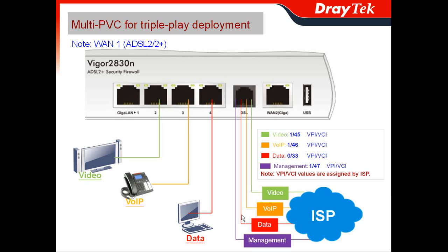Another demand from the ISP is they may require that certain LAN ports are connected only to certain services. For example, LAN 2 is for IPTV, LAN 3 is for voice over IP, and the LAN port connected to the PC is for internet service. Again, JTAG supports this.